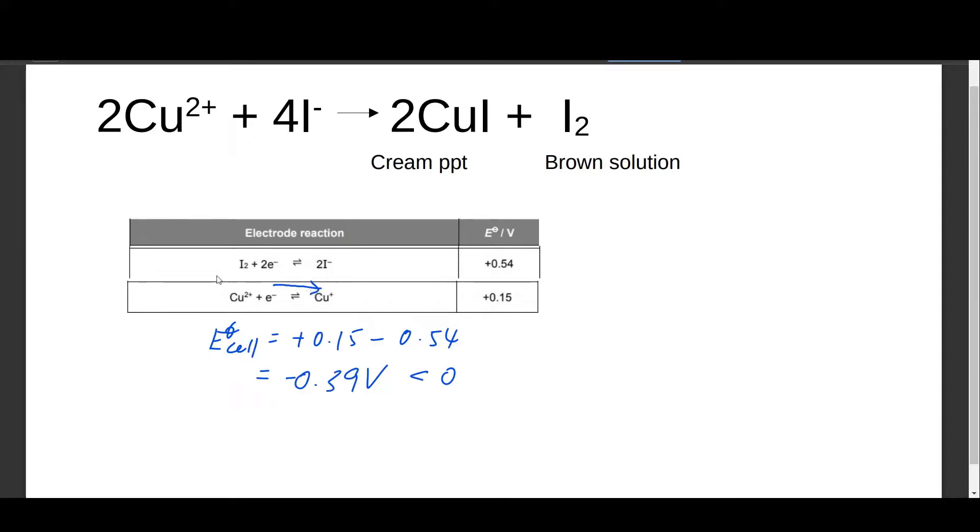So the E value of the actual reaction is actually higher than 0.15. Remember, E naught is at standard conditions, but actually the reaction doesn't take place at standard conditions because of the precipitation of the copper one ions. This causes the decrease in the concentration of Cu⁺, and the position of equilibrium will shift to the right to counteract this decrease. You'll have more Cu²⁺ forming Cu⁺, and therefore your E value of this reaction actually increases to such a way that it is likely to be bigger than 0.15, or it will increase such that the E naught cell becomes more than zero and the reaction is spontaneous.